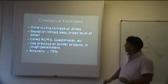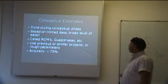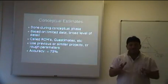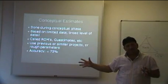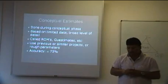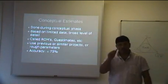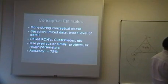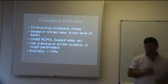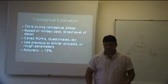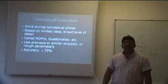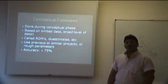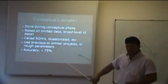That is what a conceptual estimate is all about. And where did you get it from? It used previous or similar projects for rough parameters. So when you have a project that you're currently busy with which is similar to a project that has been completed in the past, you can make use of that historical data as a rough order of magnitude estimate during a conceptual phase. What is the accuracy? If you look at the presentation, you will be more or less 75% accurate. Your accuracy is plus minus 75%. So the total project value, in terms of conceptual estimate, can never be your budget because it's only 75% accurate.